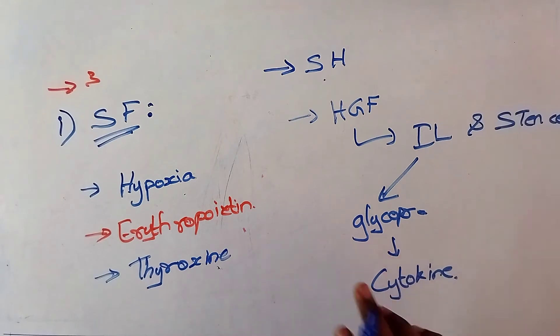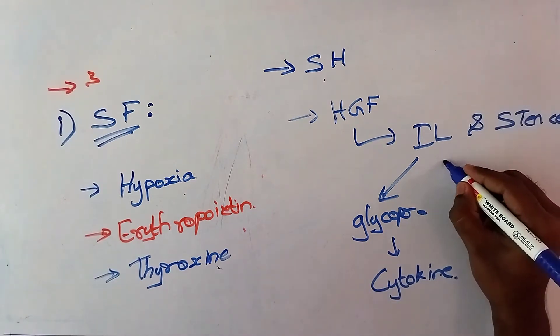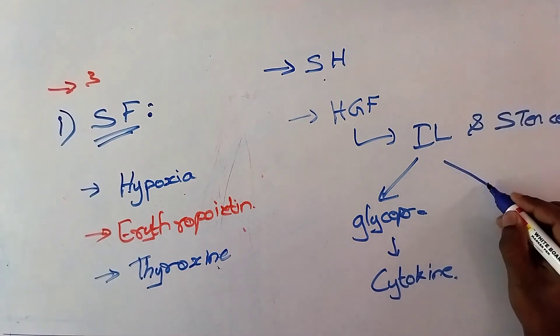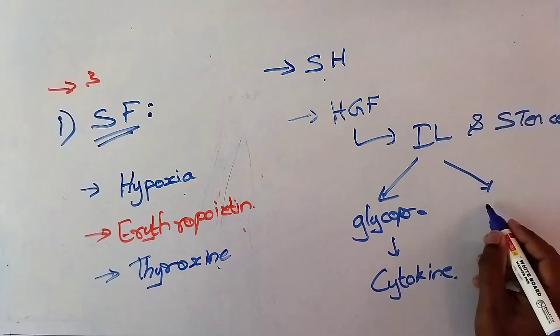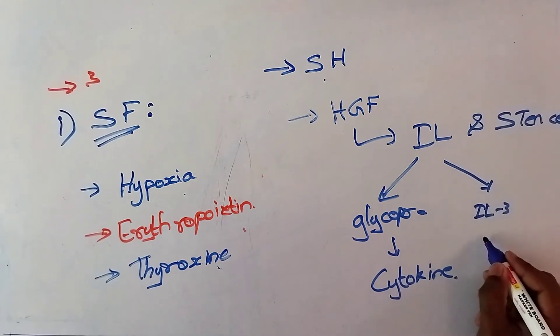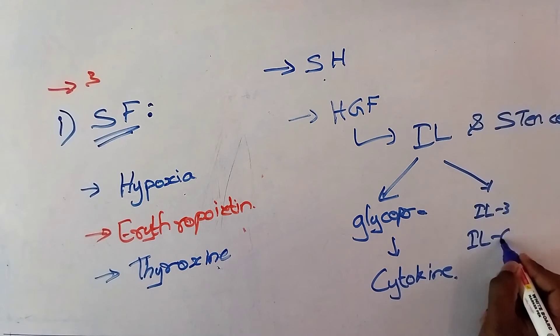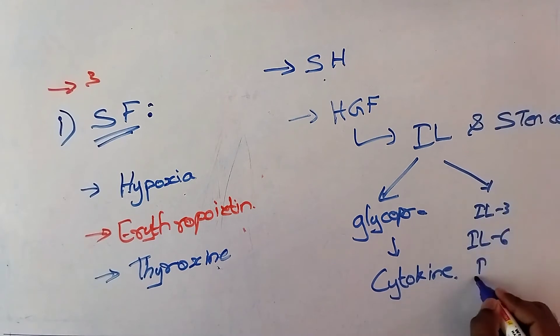These interleukens are involved in erythropoiesis. There are three interleukens involved: interleukin-3, interleukin-6, and interleukin-11. Interleukin-3 is secreted by T cells. Interleukin-6 is secreted by T cells as well as endothelial cells and macrophages. Interleukin-11 is secreted by osteoblasts.